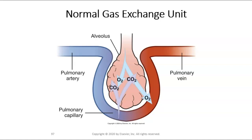Just as a little bit of review, I wanted to put up this picture of the normal gas exchange unit. A reminder that oxygen comes in, we breathe it in, and carbon dioxide is then offloaded. What you see here is the alveolus — a single alveoli — where deoxygenated blood comes in, is oxygenated, and returned to the heart for circulation. This is the basis of gas exchange in the lungs.